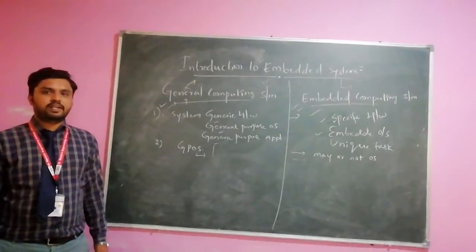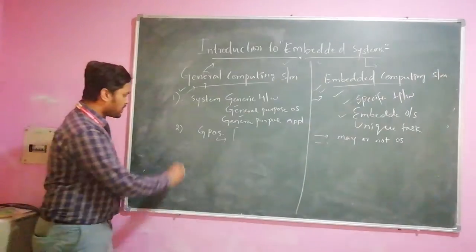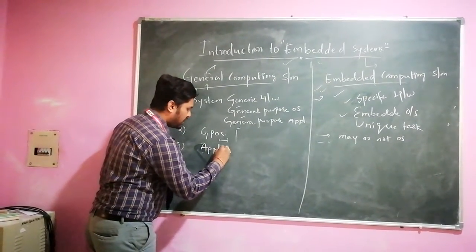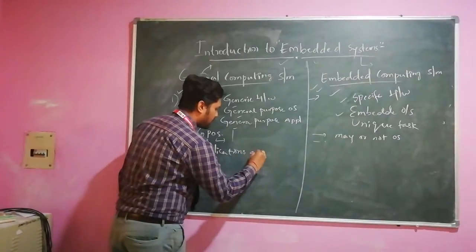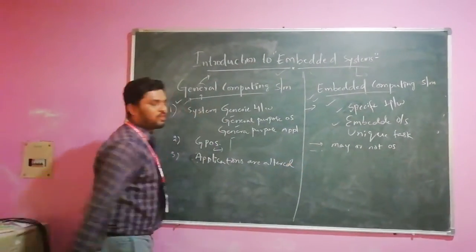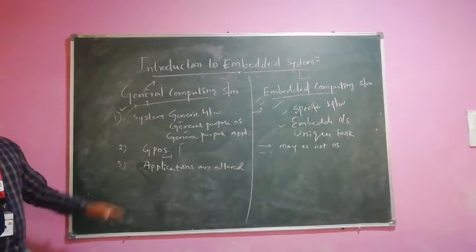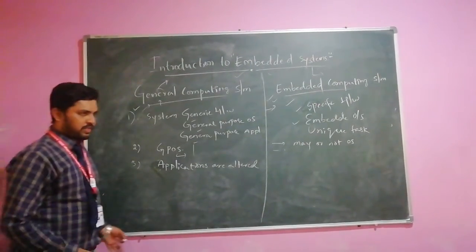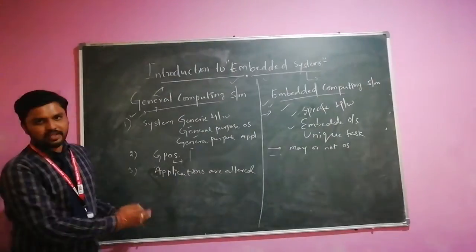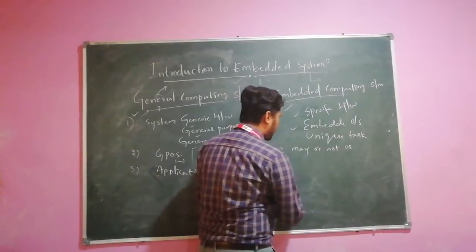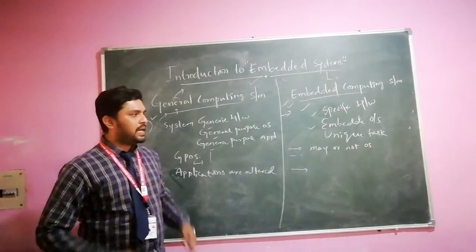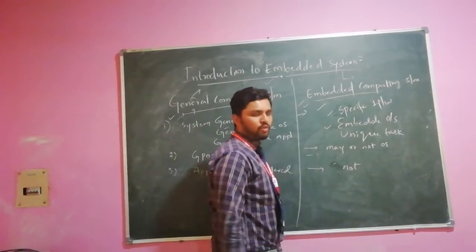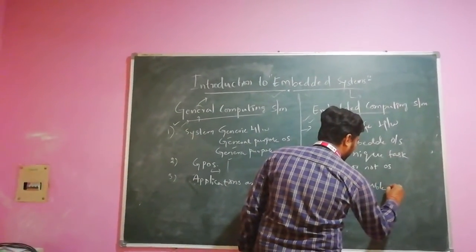In a general computing system, applications can be altered — for example, if you don't want Windows 7, you can install Linux or Ubuntu. But in an embedded computing system, all programs are predefined at the time of manufacturing. We are not able to change any of the programs or the operating system.